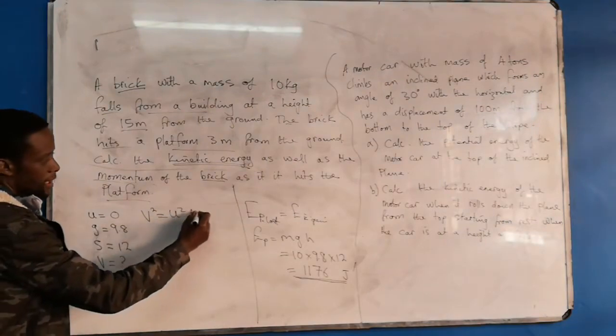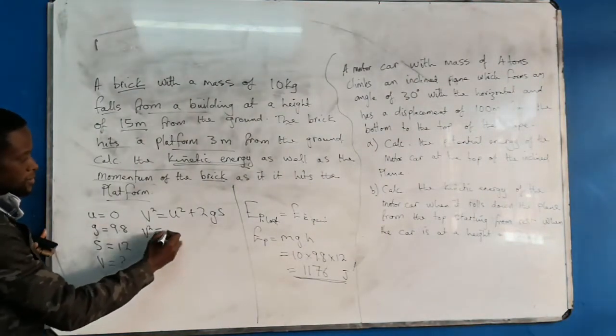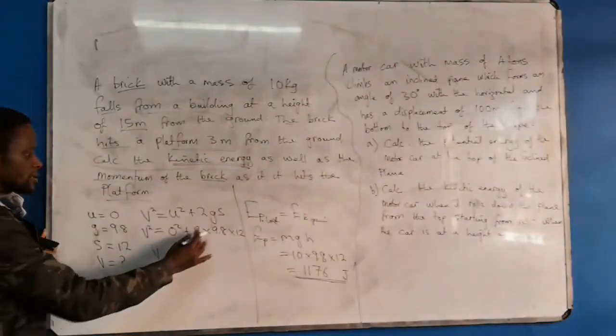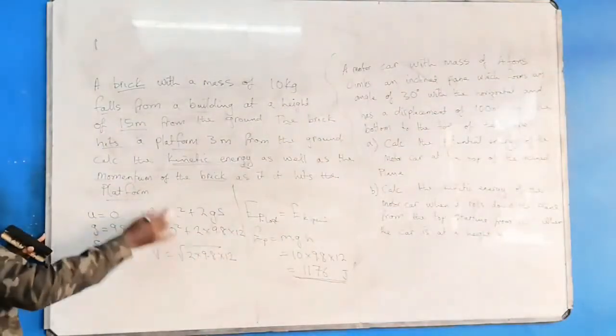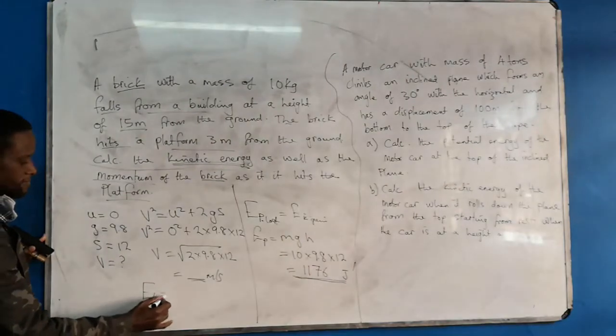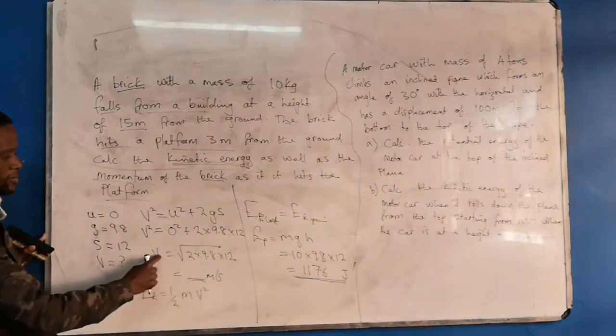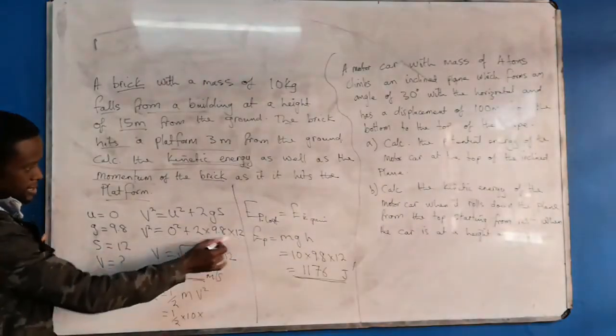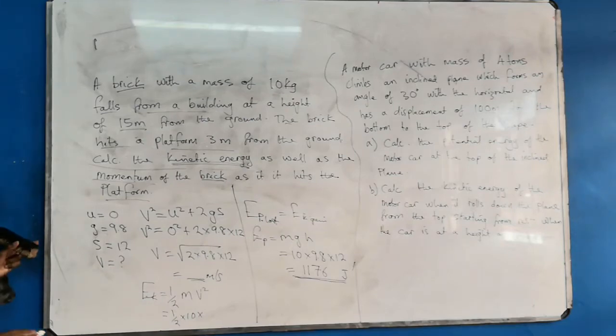Remember, v squared equals u squared plus 2as. You have zero squared plus two times nine point eight times twelve. Then you find the square root of whatever this is. Two times 9.8 times 12. This will give us our velocity in meters per second. Then we calculate for the kinetic energy: half times the mass and the velocity squared. Or you don't even need to find v because it will take us far. That's v squared: half times 10 times whatever v squared this is. We still end up with 1176 joules. This is v squared here.